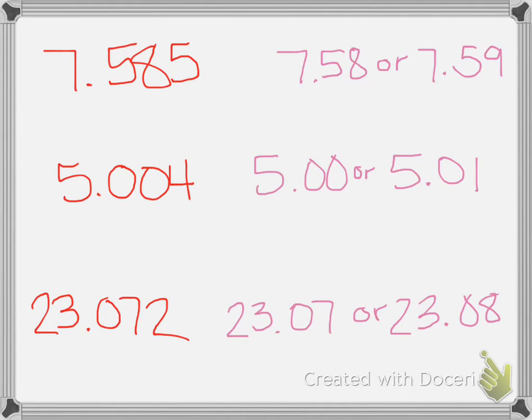Number 2 says circle the number that shows each decimal rounded to the nearest hundredth. So if we look at our first one, we have our 8 in our hundredths place. We look to the right, it's a 5, so we round up. So our 8 is now going to be a 9, so the second one is correct.